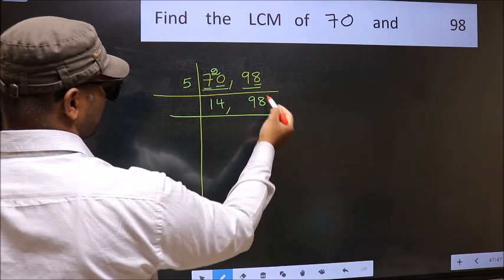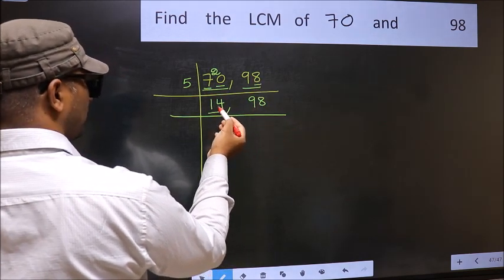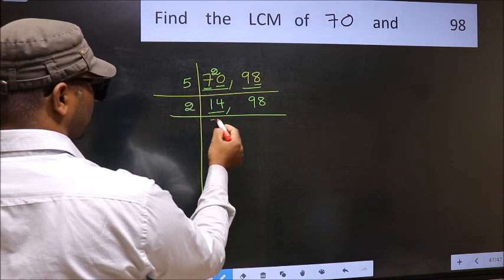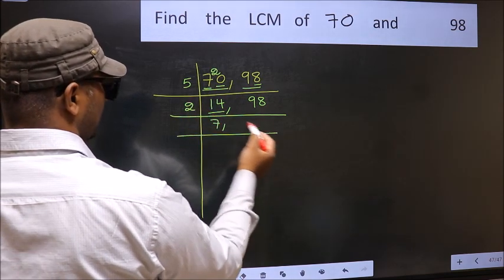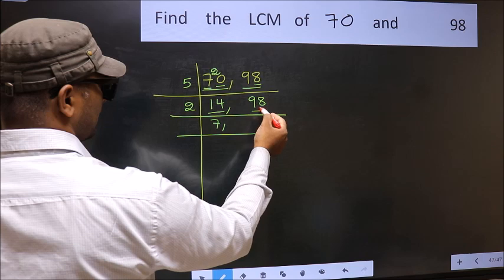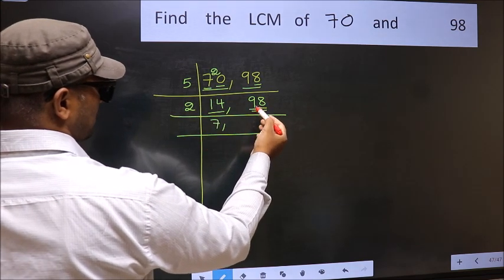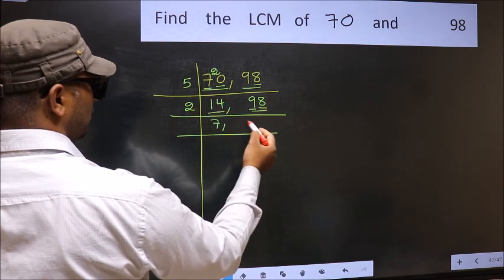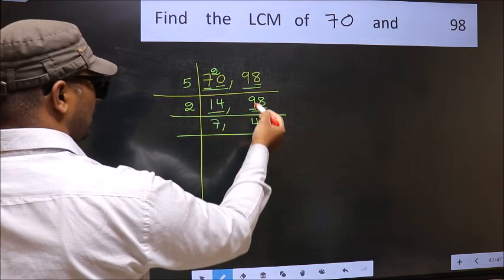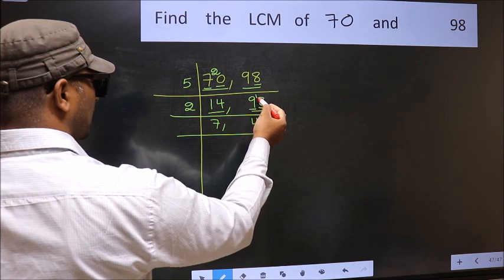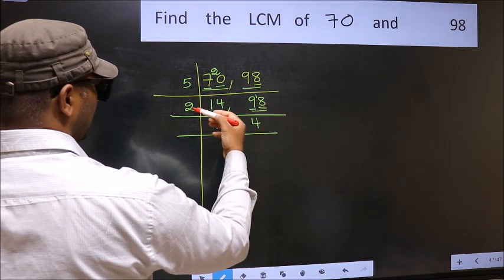Now here we have 14. 14 is 2 sevens. The other number 98, last digit 8 is even, so this is divisible by 2. First number 9, a number close to 9 in the 2 table is 2 fours, 8. 9 minus 8 is 1. 1 carried forward is 18. When do we get 18 in the 2 table? 2 nines is 18.